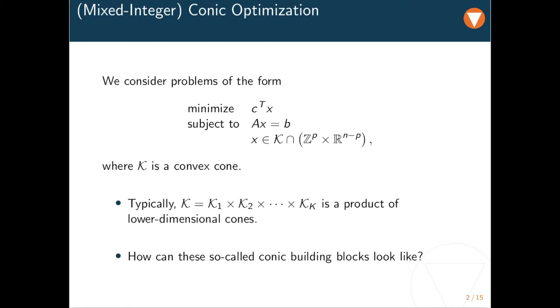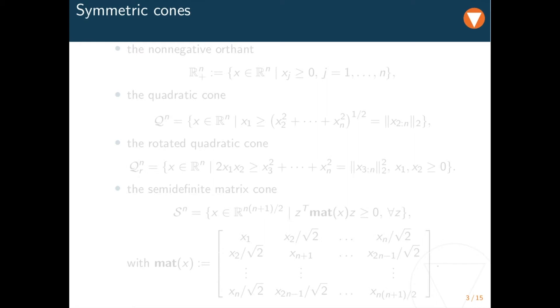In the following, we will see various examples of such lower-dimensional conic building blocks. Let's start with some of the so-called symmetric and probably most well-known cones. The non-negative orthant just imposes non-negativity on the involved variables. It is easy to realize that this cone is enough to cast linear and mixed integer linear problems as a special case of the conic framework.